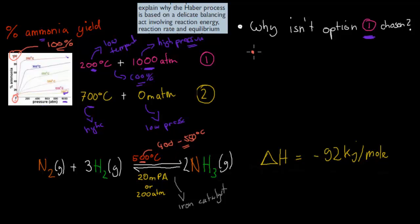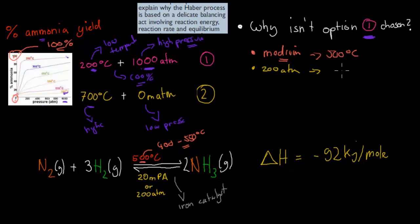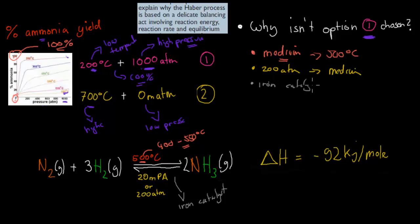The temperature we choose is medium — around 500 degrees Celsius, not low and not high. The atmospheric pressure we choose is about 200 atmospheres, which is also medium — between 0 and 1,000. And we also use an iron catalyst. There's a reason for all of this — it's the whole balancing act.